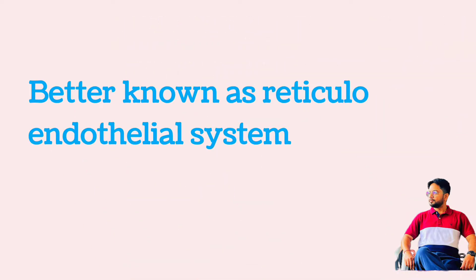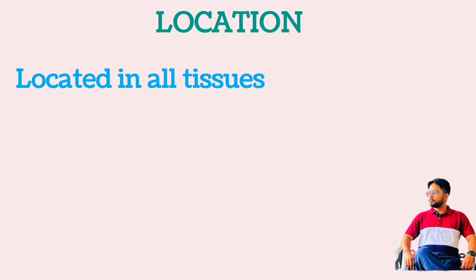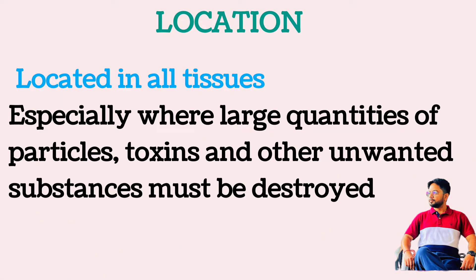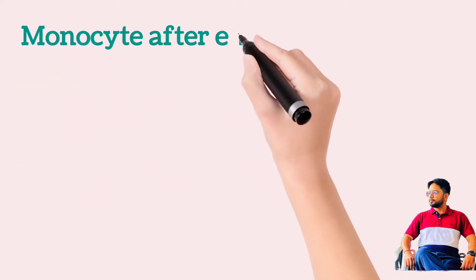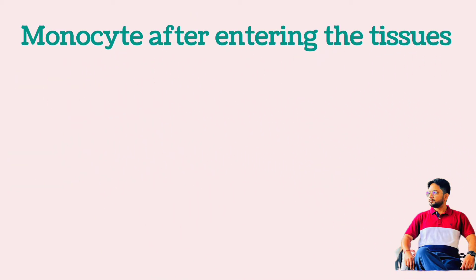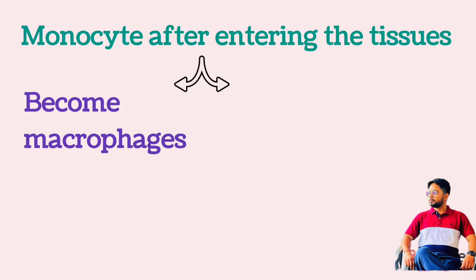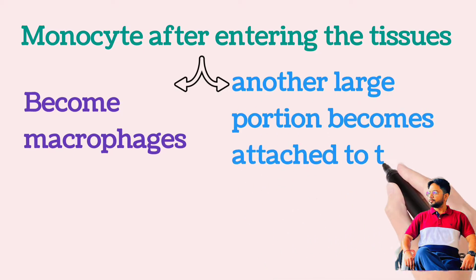Although the term reticuloendothelial system is much better known in medical literature than the term monocyte-macrophage system, this system is a generalized phagocytic system located in all tissues, especially in tissue areas where large quantities of particles, toxins, and other unwanted substances must be destroyed after entering the tissues.